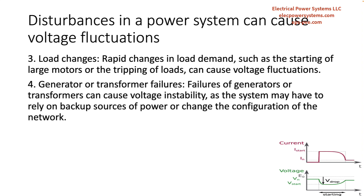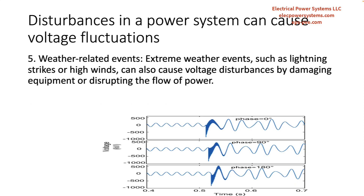Generator or transformer failures can cause voltage instability, as the system may have to rely on backup sources of power or change the configuration of the network. Extreme weather events, such as lightning strikes or high winds, can also cause voltage disturbances by damaging equipment or disrupting the flow of power.